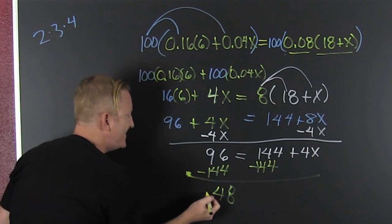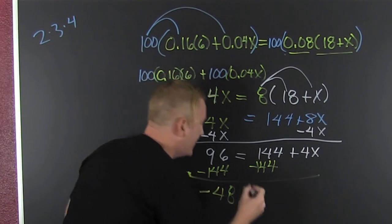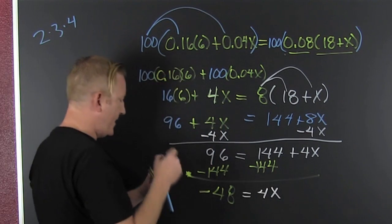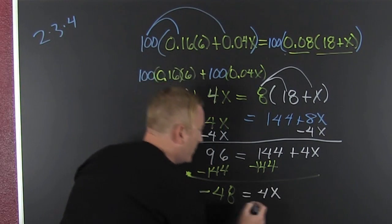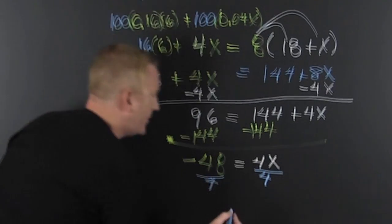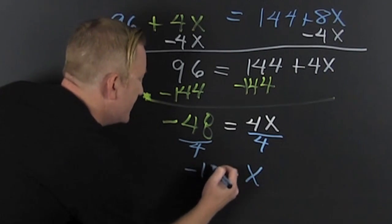Because the big one was negative. And then on that right side, I still have my 4x. And then divide both sides by 4, and I see that my x turns out to be negative 12.